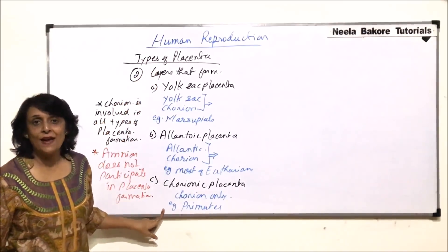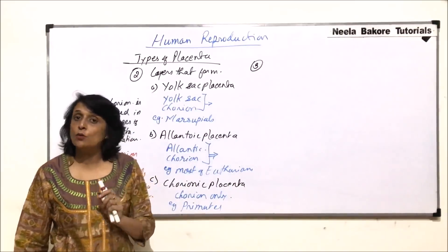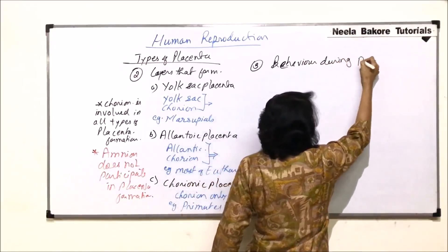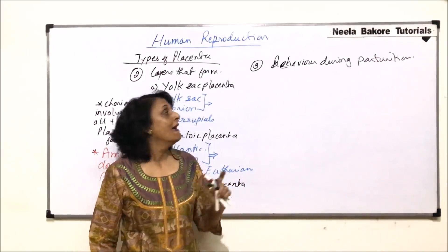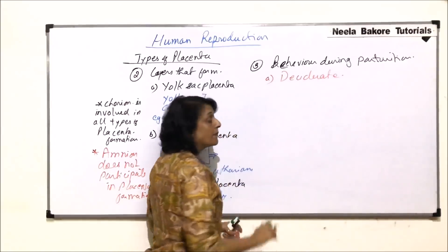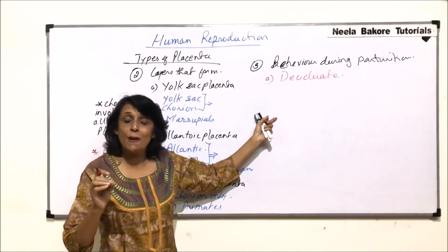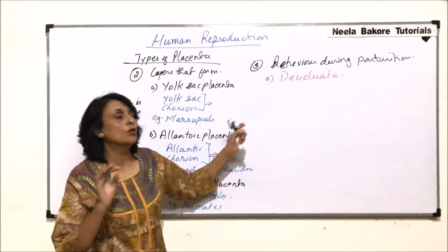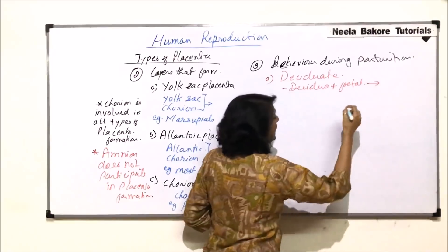Another way of classifying placenta is based on the behavior of placenta during parturition — when the fully formed fetus is expelled from the body. The first type is known as deciduate placenta. In deciduate placenta, both the maternal and fetal parts are lost. After the baby is delivered, even the decidua — the maternal part — is shed along with the fetal part.